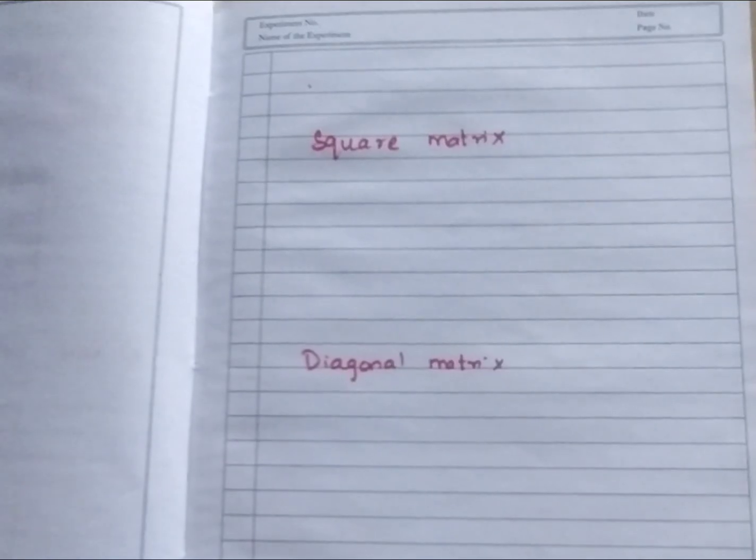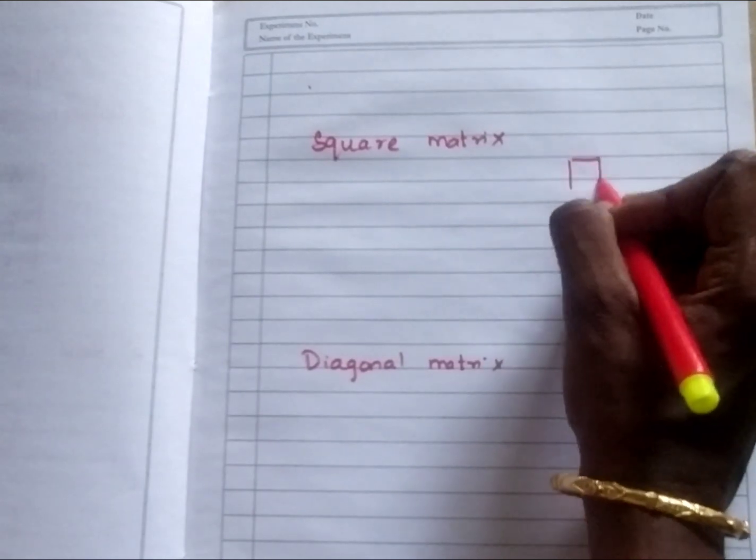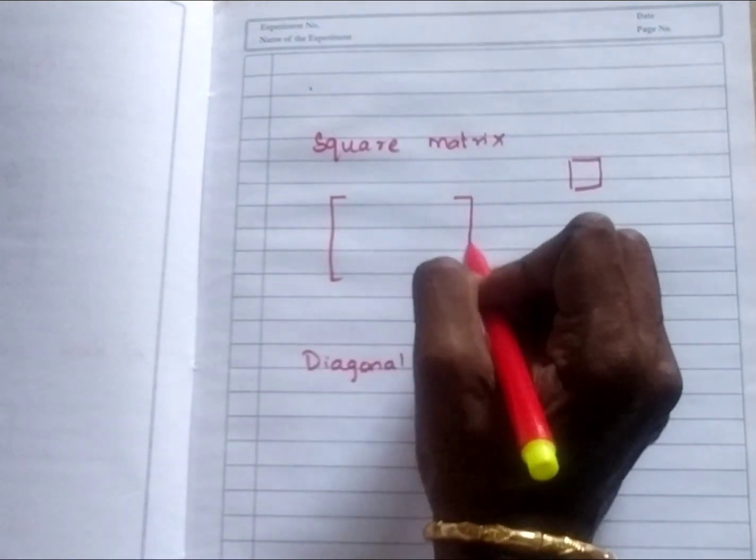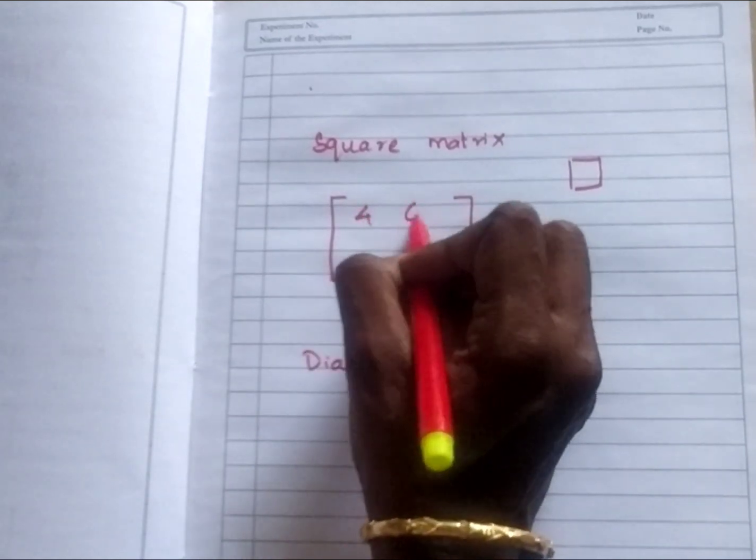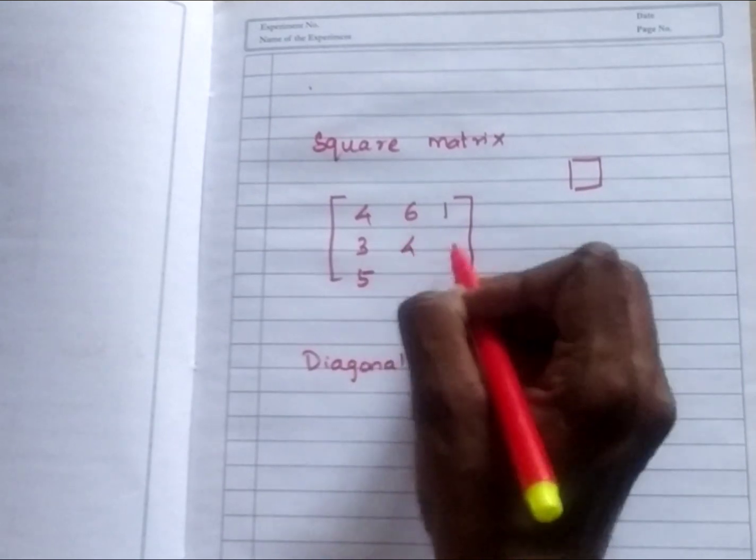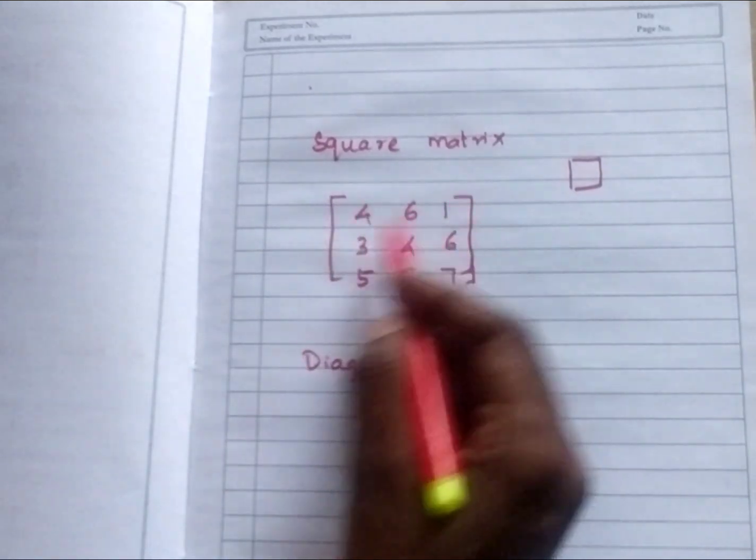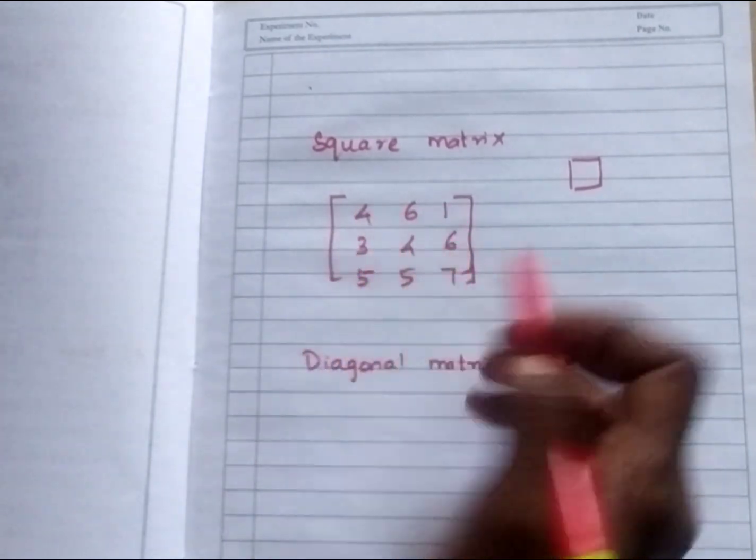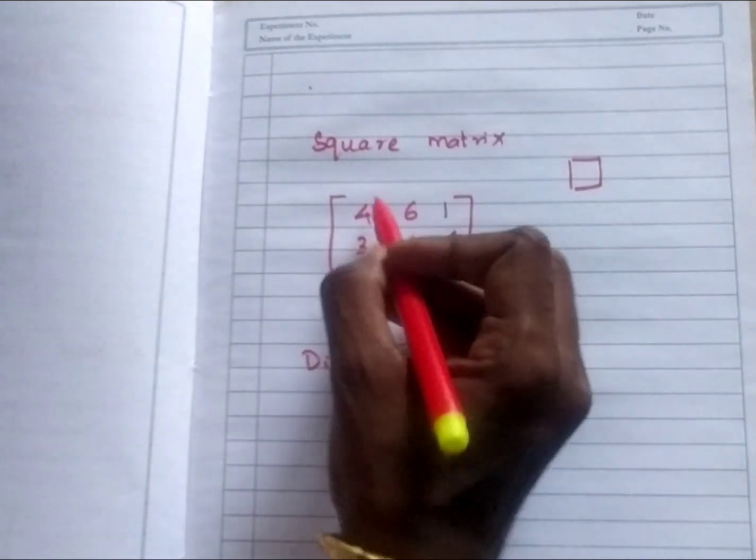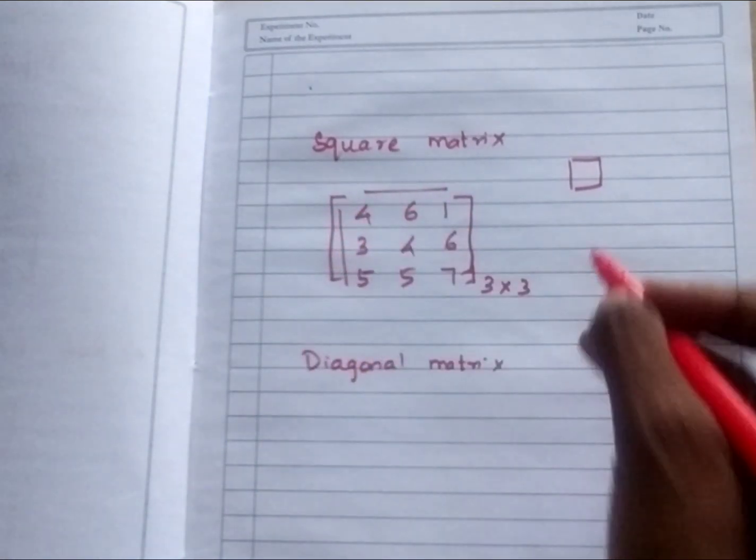Next type, next is square matrix. What is meant by square? All the sides will be equal. So in the matrix also all the sides. See 4, 6, 1, 3. Numbers could be anything, but if you count the order, order means row into column. How many rows? 3 rows. How many columns? 1, 2, 3. So this side also, this side also, the same number should be there. It is called square matrix.